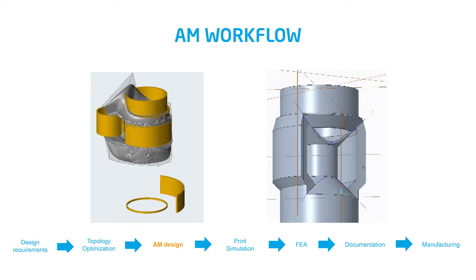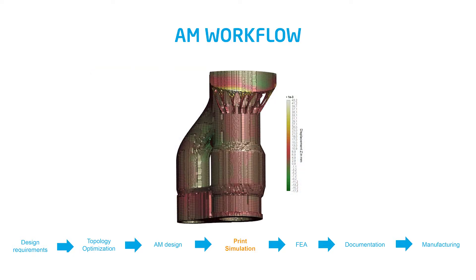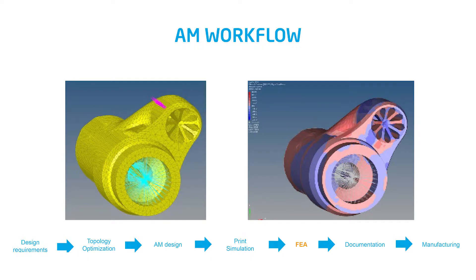Next we use results from optimization to create an AM component. Build orientation needs to be considered in this phase and guides the shape of the component. When the design is almost done, a print process simulation and FEA analysis loop is carried out to finalize the design. However, no design is good enough on its own — somehow we need to transfer all the information created in the design process to manufacturing and the machine operator.